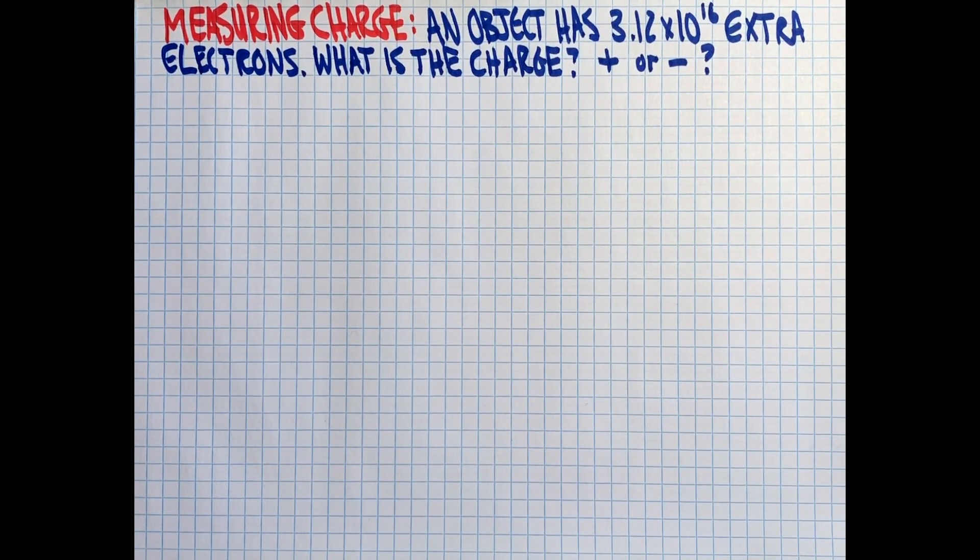Measuring charge. An object has 3.12 times 10 to the 16 extra electrons. What is the charge, and is it positive or negative?